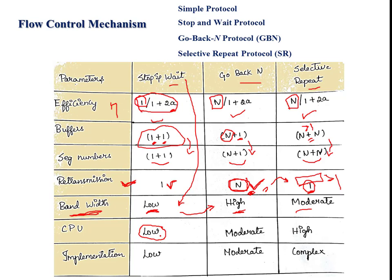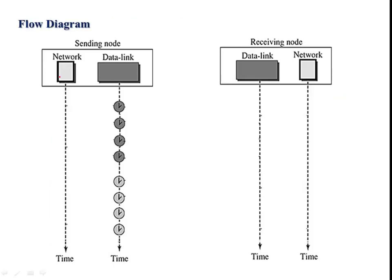Similarly, in terms of CPU and programming complexity: it is simpler in stop-and-wait, moderate in go-back-N, and high in selective repeat. In go-back-N, the sender window size is greater than one but the receiver window size is one, and the sequence follows a strict order — when packet zero is transmitted, the receiver expects zero; once acknowledged, it expects one; then two, and so on.